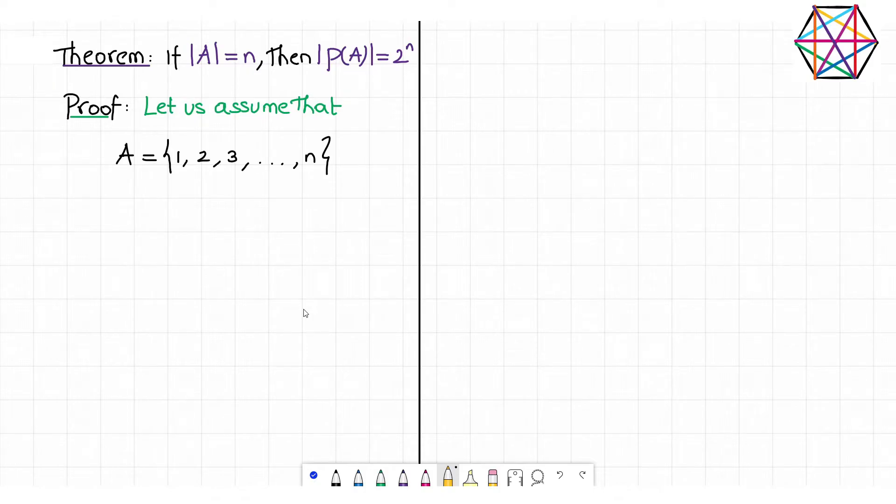Mind it that we are simply choosing the objects here, hence we apply the concept of combination. There is no arrangement involved in this problem because order doesn't matter in a set. So we don't apply permutation, we apply only combinations.